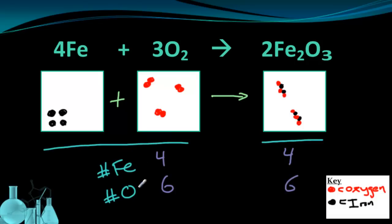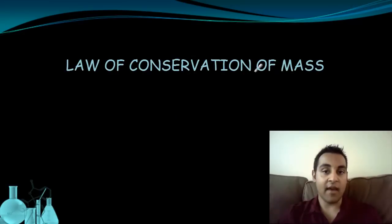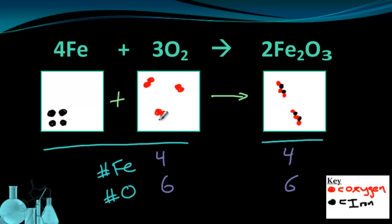This observation reflects a principle that we call the law of conservation of mass. The law of conservation of mass says that in a chemical reaction, matter cannot be created or destroyed. So we have to have the same number of atoms that we start with in what we end with, because we can't create or destroy any matter in this process.